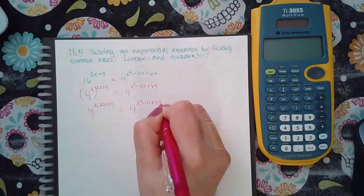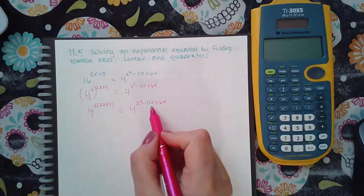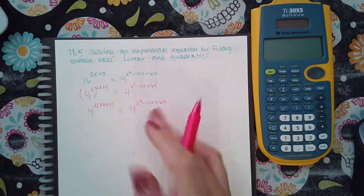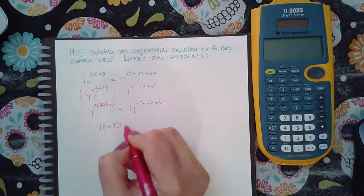I'm going to do two steps in one. I'm going to drop my bases because I know that this exponent has to equal this exponent in order for the whole equation to be true. And I'm also going to distribute that 2 at the same time.